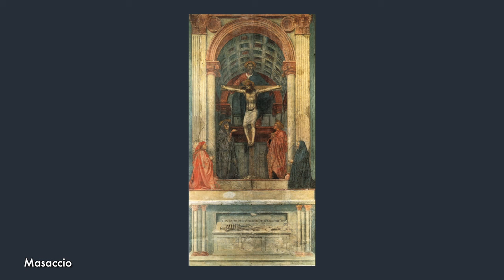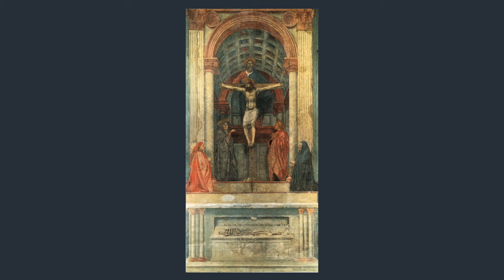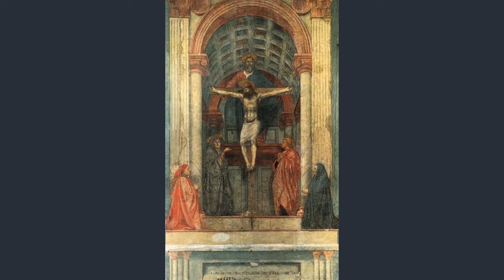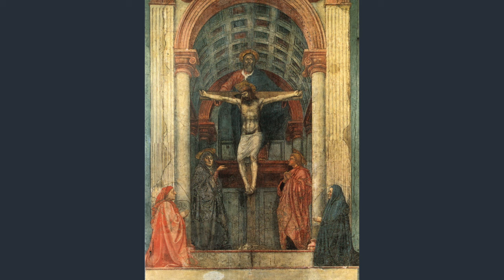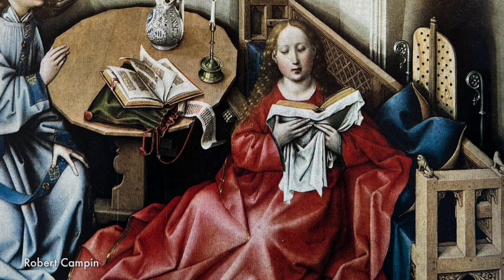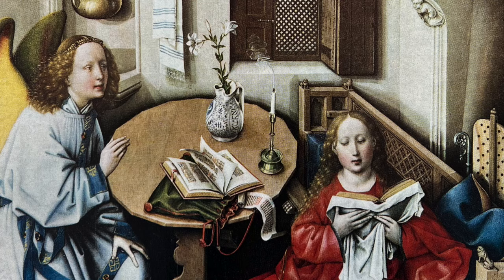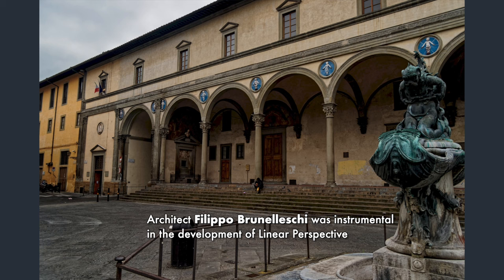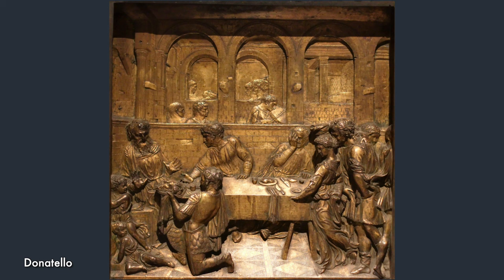Linear perspective is a system invented by Italian artists in the 1400s that enables us to project an accurate illusion of our three-dimensional world onto a flat two-dimensional surface like a canvas or piece of paper. Artists before then understood that objects look smaller the farther away they are from our eye, but they couldn't quite duplicate the way our eye sees. These Italian artists formalized the recession of space into a mathematically rigorous system.